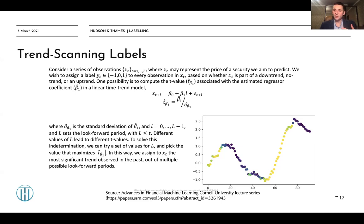Various values of L (L is the number of bars from the current bar we use to fit a regression) of course lead to different t-values. So how do you choose them?